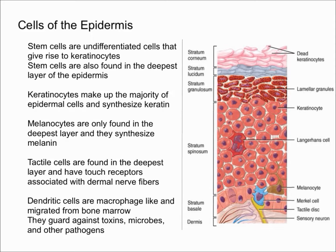Dendritic cells are macrophage-like cells that originate in the bone marrow and move into the epidermis, where they stay — unlike macrophages, which are more mobile. Dendritic cells guard against toxins, microbes, and other pathogens that penetrate the skin, and they can alert your immune system when they detect pathogens in the skin.